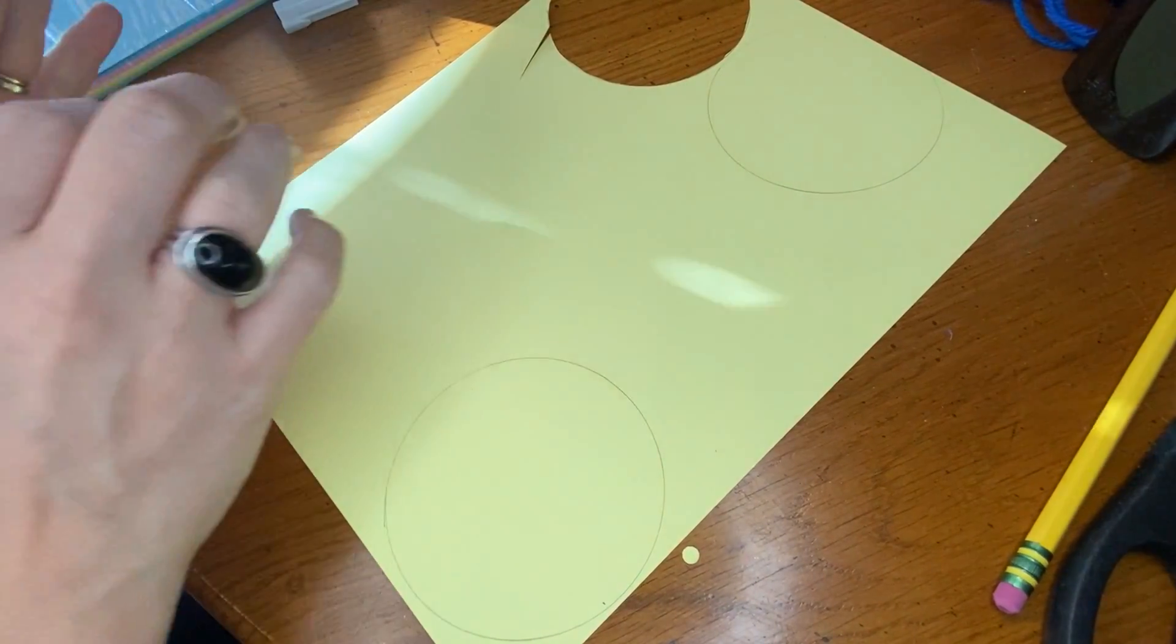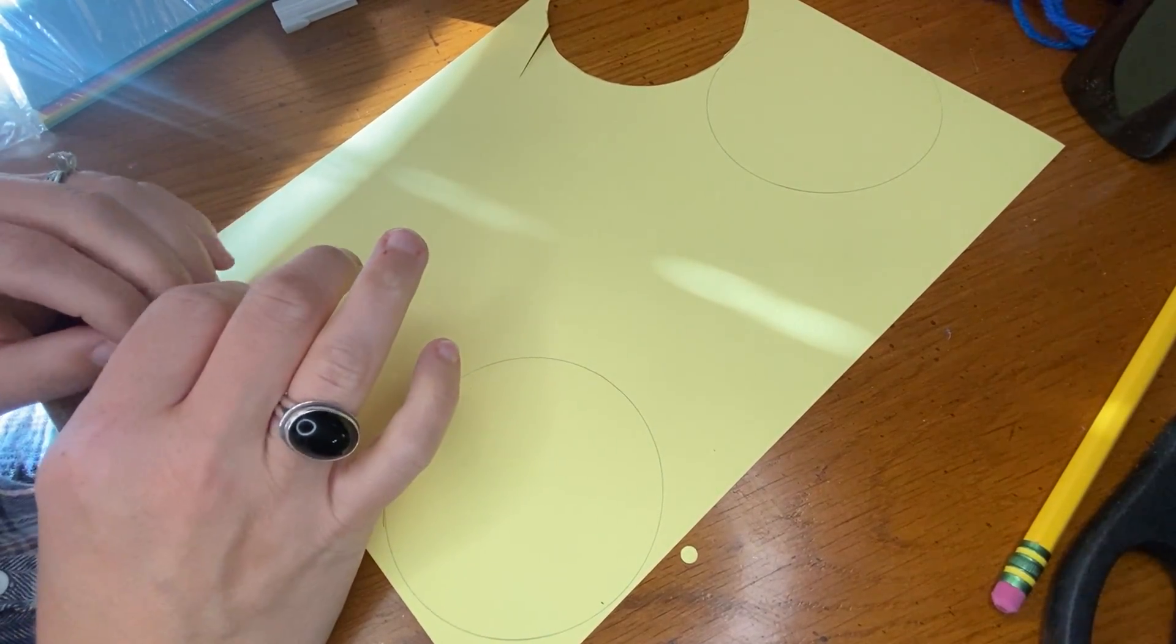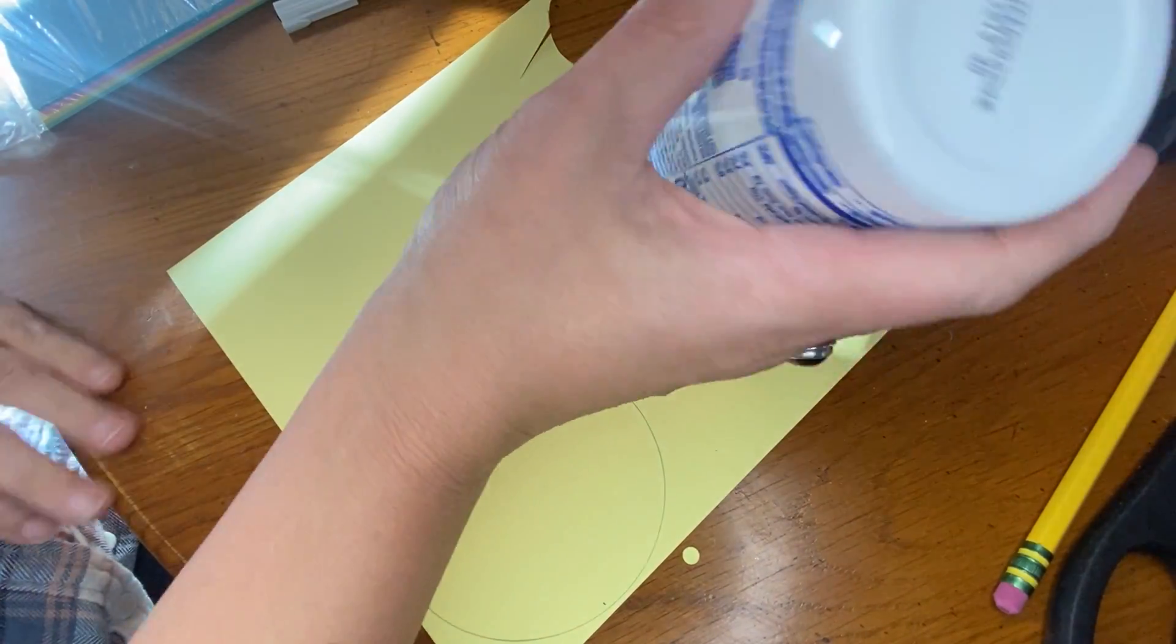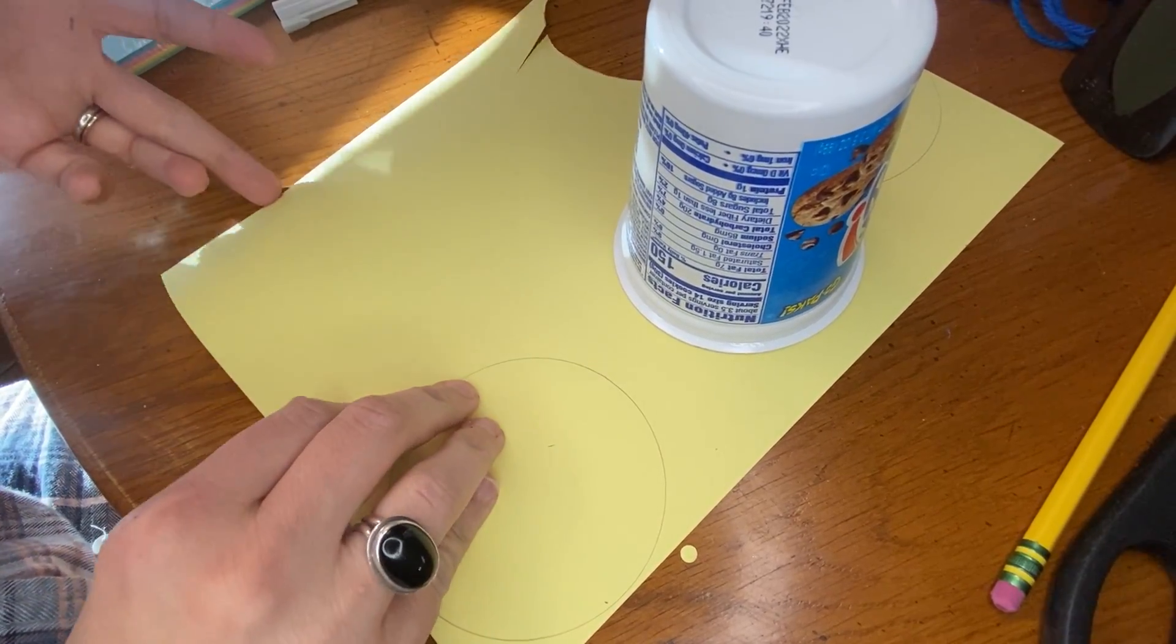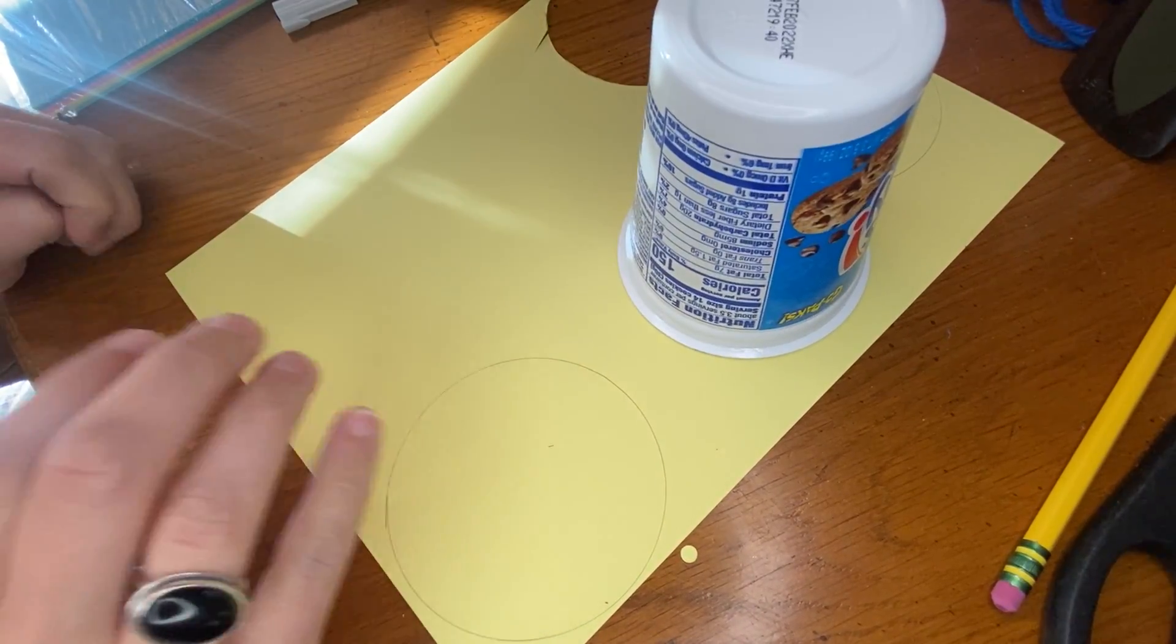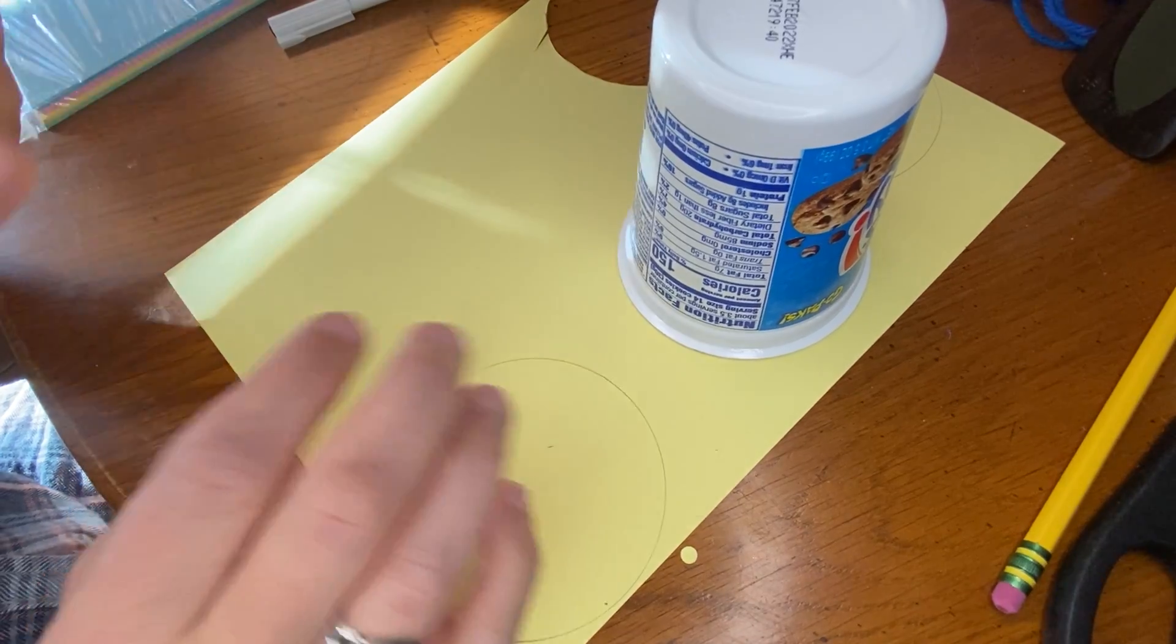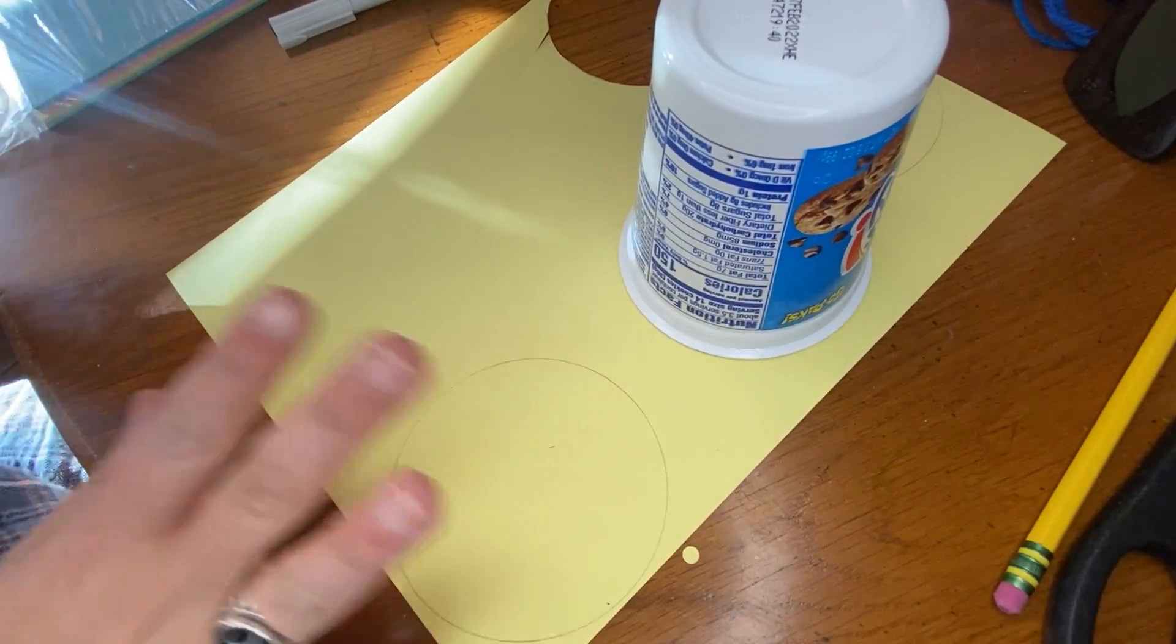So what you're going to need is some yarn, you're going to need a tracer of some sort, so I'm using my Chips Ahoy circle, a cardstock which is a thicker, slightly thicker paper. You're going to need a hole punch and your pencil, scissors, and a pen.